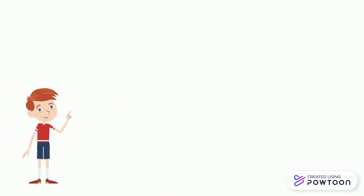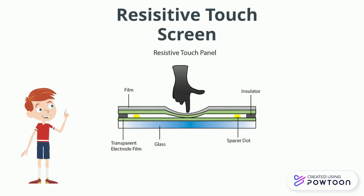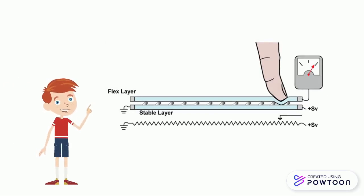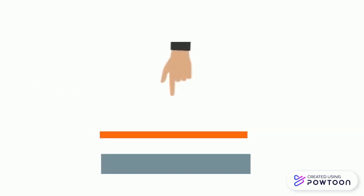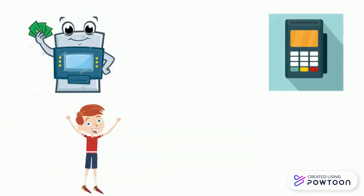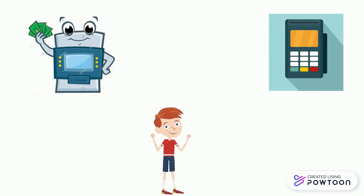Second comes the resistive touchscreen. As the name suggests, this technique uses resistance to detect touch. It consists of two layers — one layer is made of a flexible material like polyethylene and the other layer is made of hard glass or a similar substance. There is an electric current flowing on both layers and there is a space between them filled with air. As a person touches the flexible layer, it bends and touches the other layer, causing a change in current flowing through the layers, and the touch is detected. These are most commonly used in ATMs, credit card readers, and many more devices.